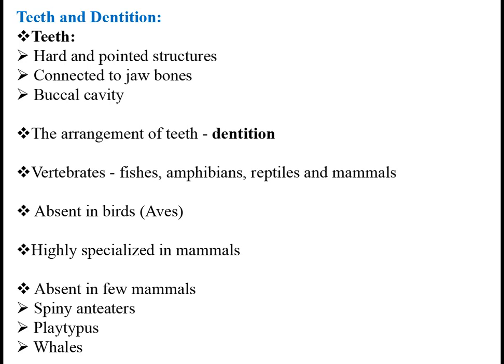Teeth are found among fishes, amphibians, reptiles and mammals. Teeth were also present in ancestral birds but absent in modern birds. Teeth are most highly specialized in mammals, but also absent in few mammals. For example, in spiny anteaters it is completely absent. In platypus, the embryonic teeth are replaced in the adult by bony epidermal plates. And in whales, the fetal teeth are replaced before or soon after birth by baleen plates for straining food.